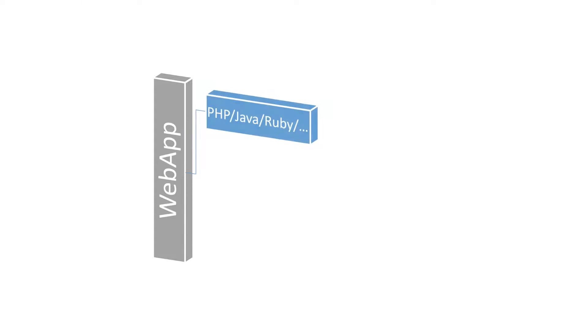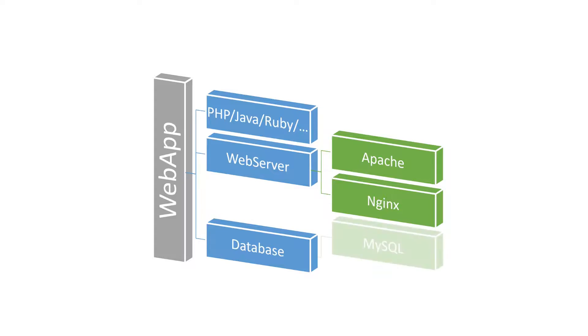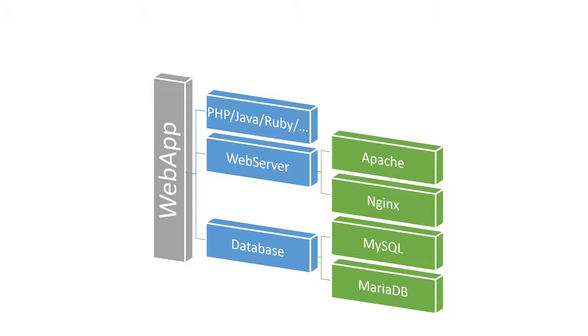For this example, I'm assuming you're building some web app that might be in Java, PHP, or Ruby. This is served by a web server like Apache or Nginx, and the web app uses some database to read and write data persistently, which might be MySQL or Redis. In essence, we can call those services which interact with each other.